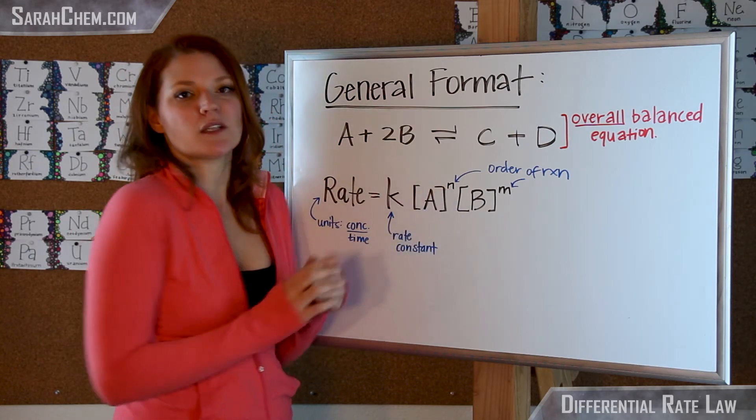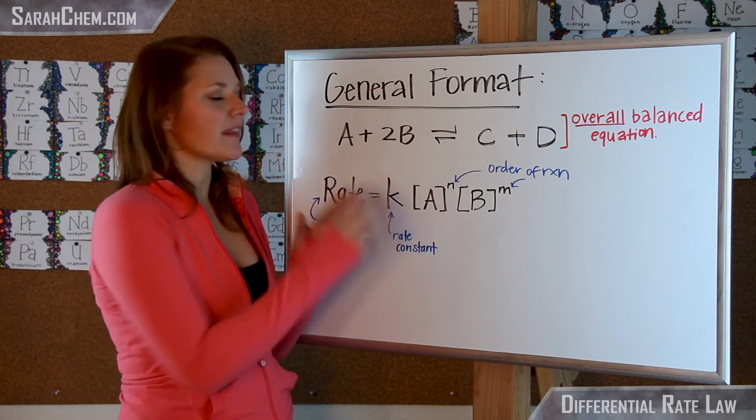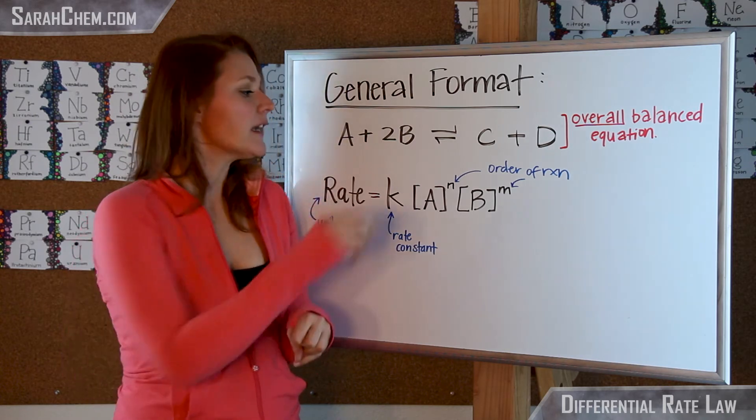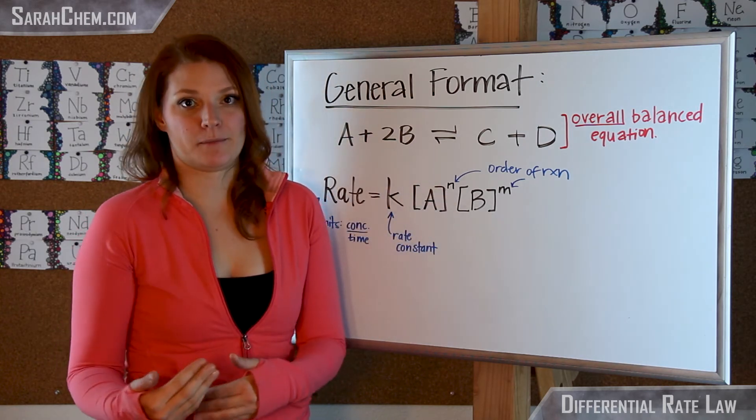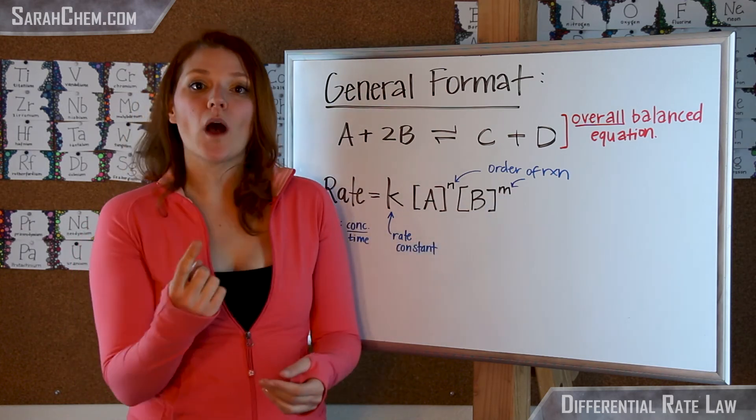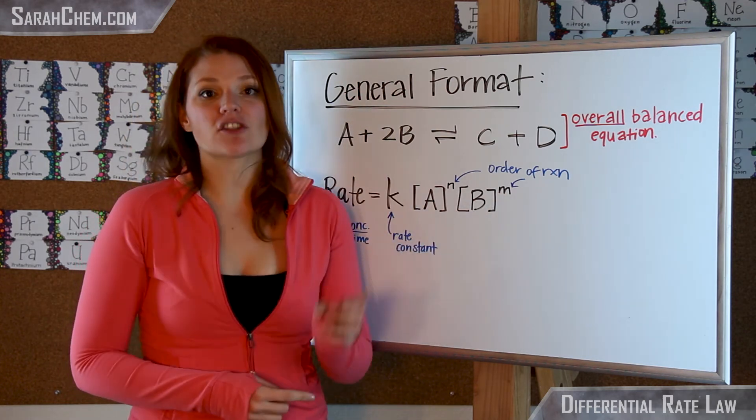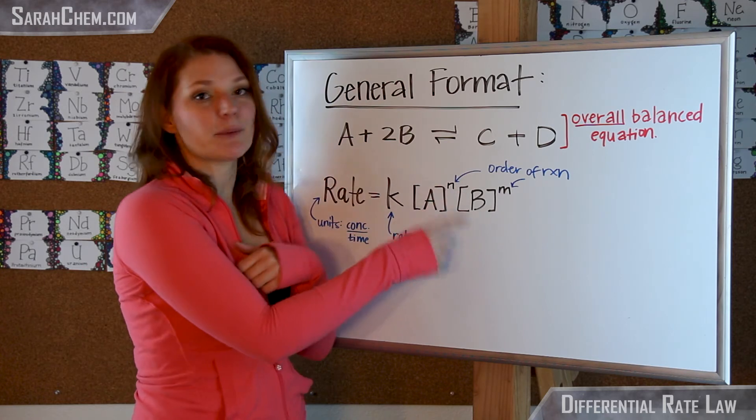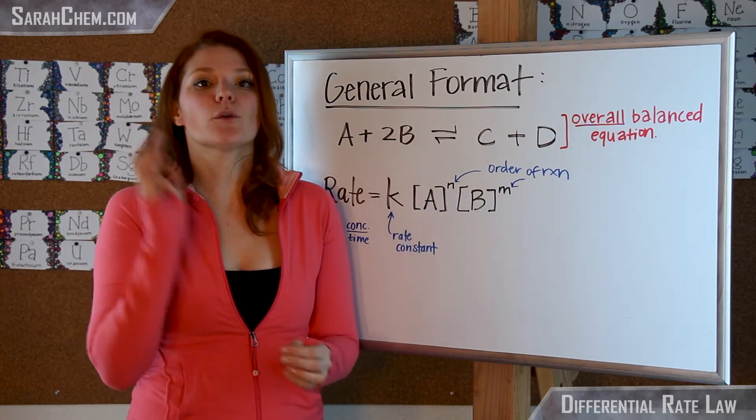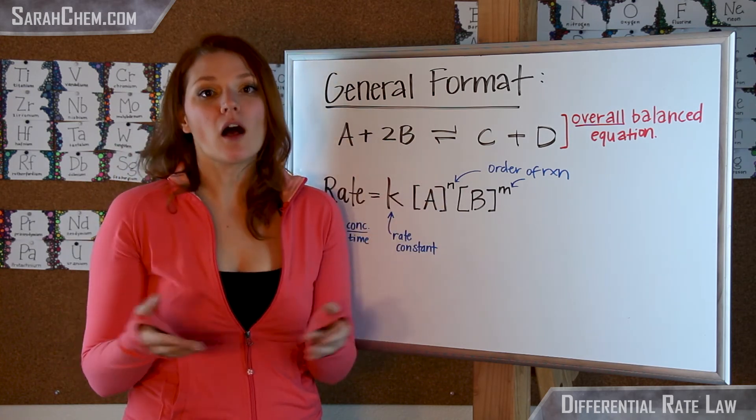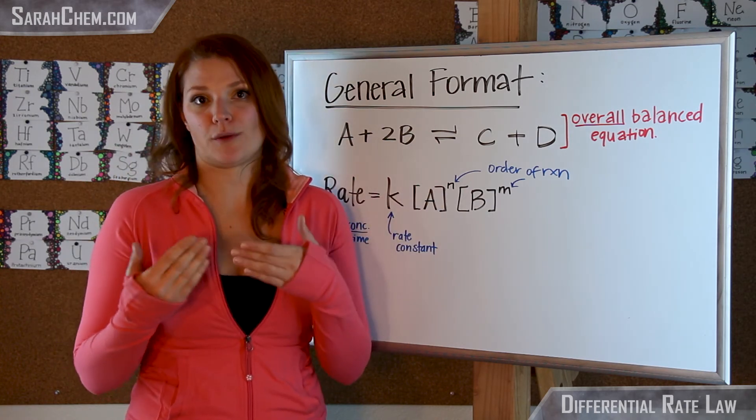Let's just say that here n was equal to 2. What that would mean then as far as order of reaction goes is that the reaction is second order with respect to A. Let's say that m was 1. I would then say that the reaction is first order with respect to B. If I wanted the overall order, that would be 2 plus 1, which would give me 3. So overall, the order of reaction is a third order reaction.